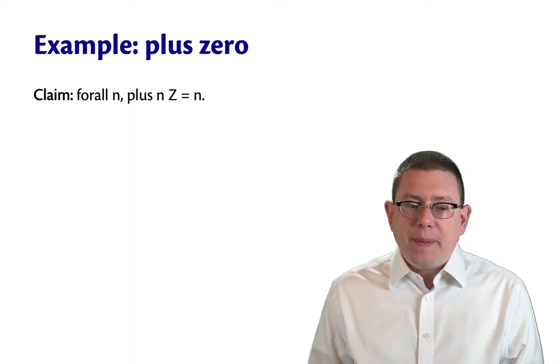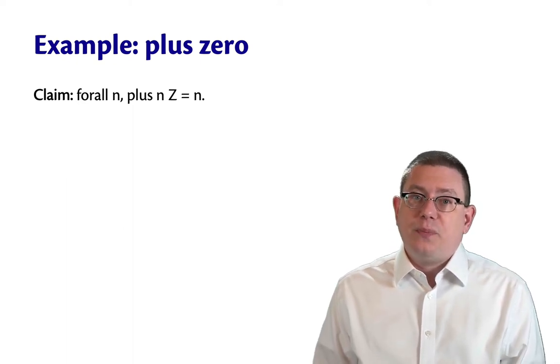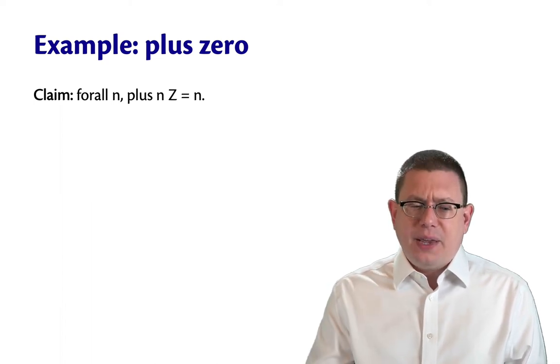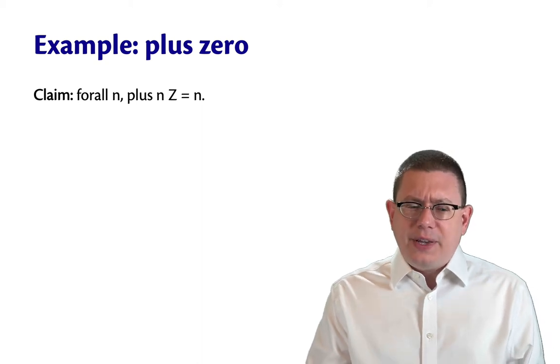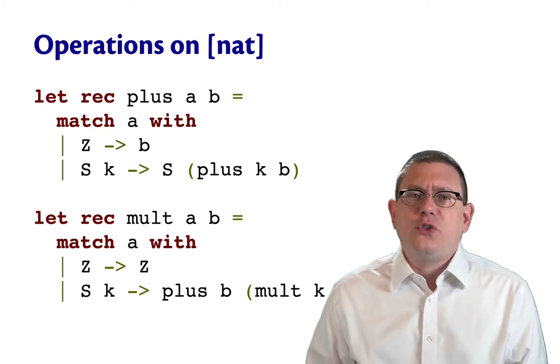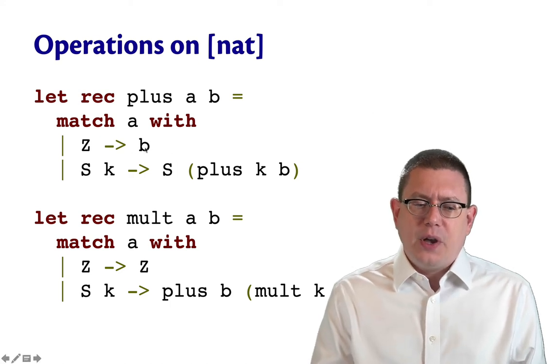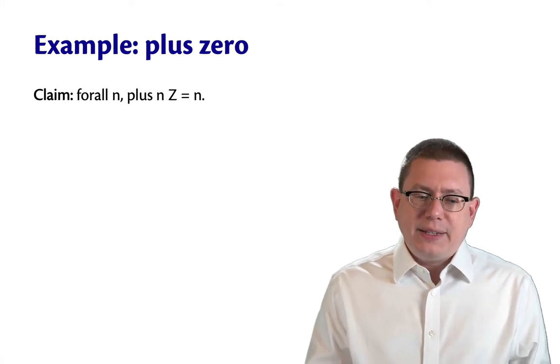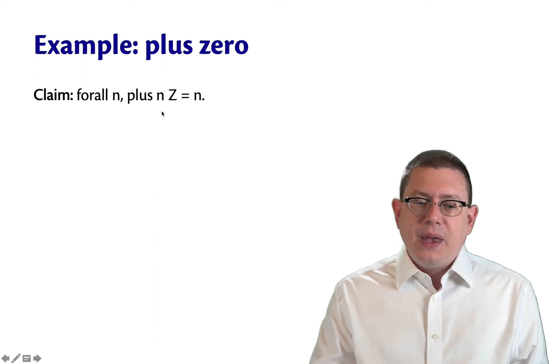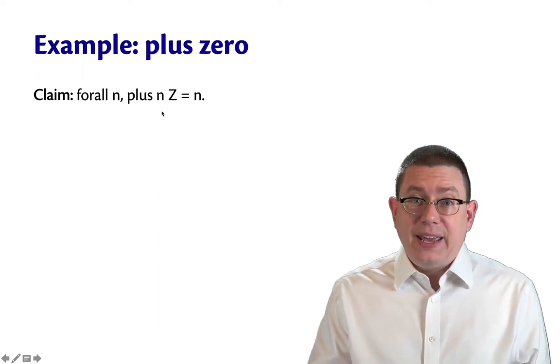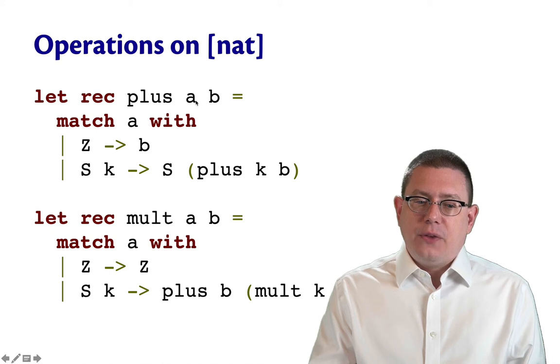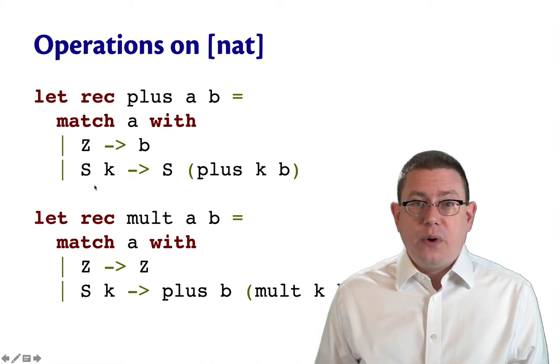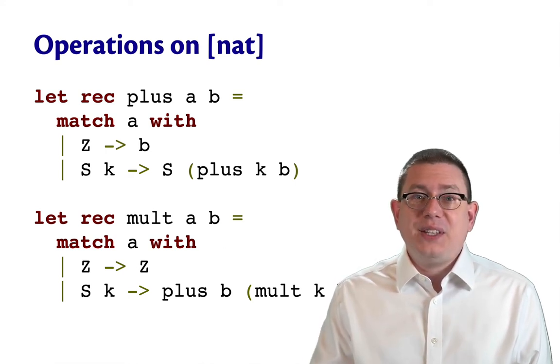So let's prove a theorem about this. Let's prove that if the second argument to plus is Z, then that just returns N, its first argument. Now, why did I pick it this way? Why did I go for the second argument being Z? Well, it's because if the first argument is Z, it's a trivial proof. In that case, just by evaluation, we automatically return the second. But this one is more interesting, because we can't take a step of evaluation of plus N Z here because we don't know what N is. Look back at this implementation here. The first argument is what we pattern match on, and we don't know whether it's going to be zero or greater than zero. So we're going to need an inductive proof.